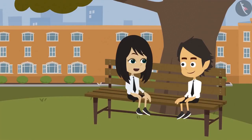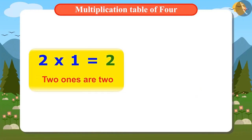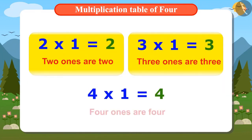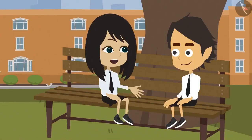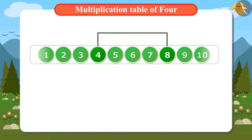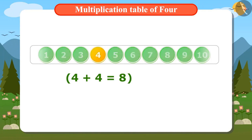We sing to memorize the tables easily. That's why 2 times 1 equals 2 is read as '2 ones are 2' and 3 times 1 equals 3 is read as '3 ones are 3.' That means 4 times 1 equals 4 is read as '4 ones are 4.' Now we got to know the first number in the multiplication table of 4. There are two ways to find the next number — either add 4 two times or find the fourth number after 4. Adding 4 two times gives us 8. Finding the fourth number after 4: first, second, third, fourth — the answer is 8.